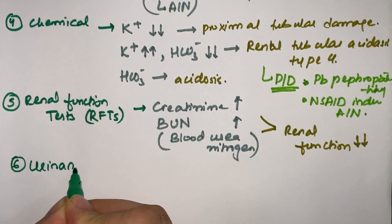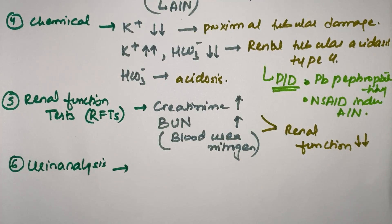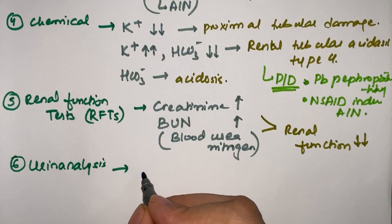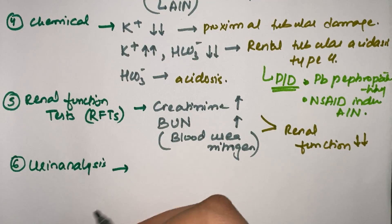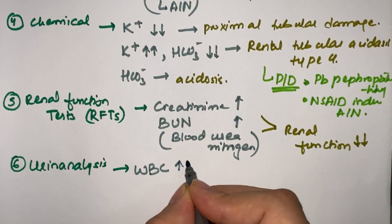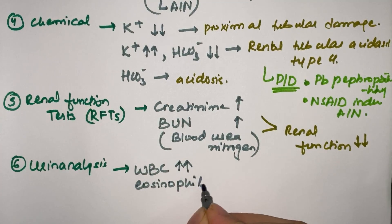In urinalysis, since this is an inflammatory disorder with white blood cells as the major culprit, we'll find elevated white blood cells, particularly eosinophilinuria.